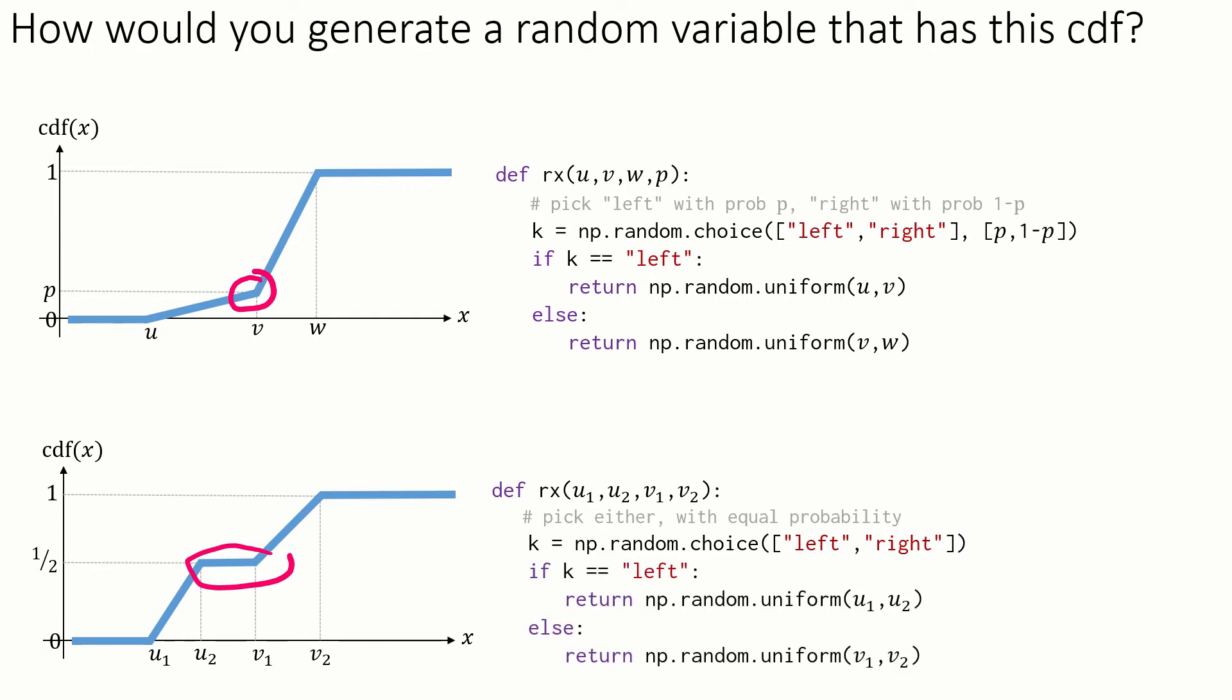Then, just as before, I choose a uniform random variable to generate with parameters based on which side I'm on. The flat bit between u2 and v1 doesn't matter. If the CDF is flat, then the pdf, i.e. the derivative of the CDF, is equal to zero. So we don't want to generate any values in that range.